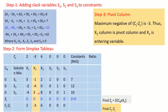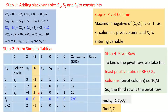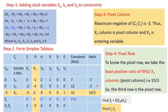Step 4 is to determine the pivot row by computing the least positive ratio of the RHS column to the x2 (pivot) column. The ratios are minus 7, minus 3, and 10 over 3. The least positive ratio is 10 over 3, so the third row is the pivot row.